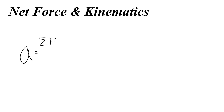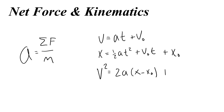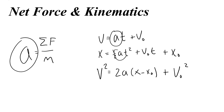In this video, we're going to talk about net force and kinematics. Acceleration can always be found if you know the net force and the mass of an object. We also use acceleration in three of our motion equations: velocity equals acceleration times time plus the initial velocity; position equals half of acceleration times time squared plus initial velocity times time plus initial position; and the 'ain't got no time' equation, v squared equals 2a times delta x, or v squared equals 2a(x - x₀) plus the initial velocity squared. We can now combine force problems with motion problems, the link being acceleration.